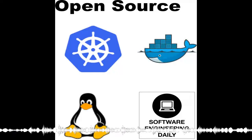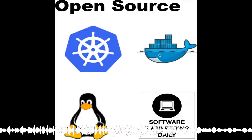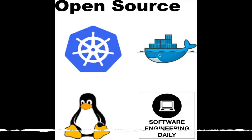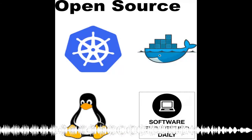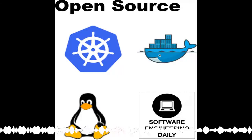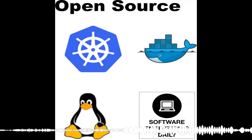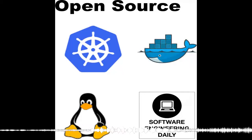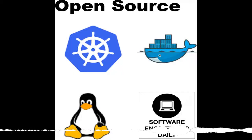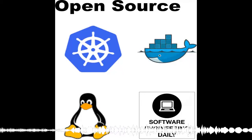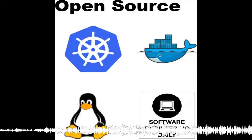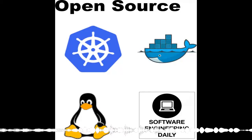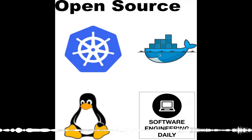Mesos and Kubernetes are tools for distributed systems management. Kubernetes is built with an emphasis on running services, whereas Mesos is commonly used for a wider variety of workloads, including data infrastructure like Spark and Kafka. Mesos can also be used as a platform to provide resource management for Kubernetes, and we discuss the interaction between Kubernetes and Mesos if you're running both of them today.